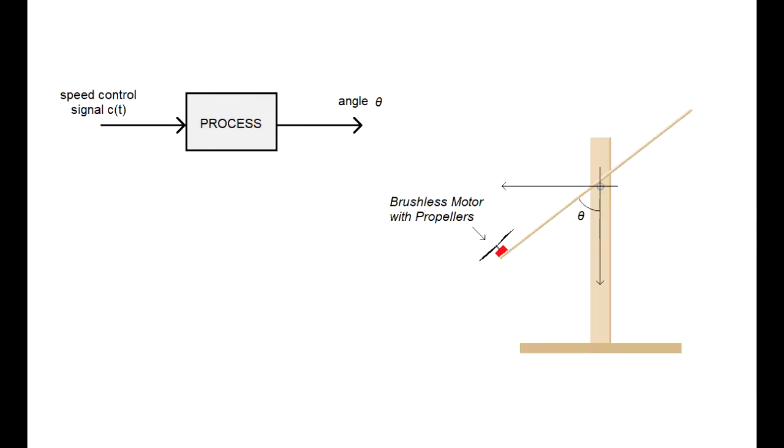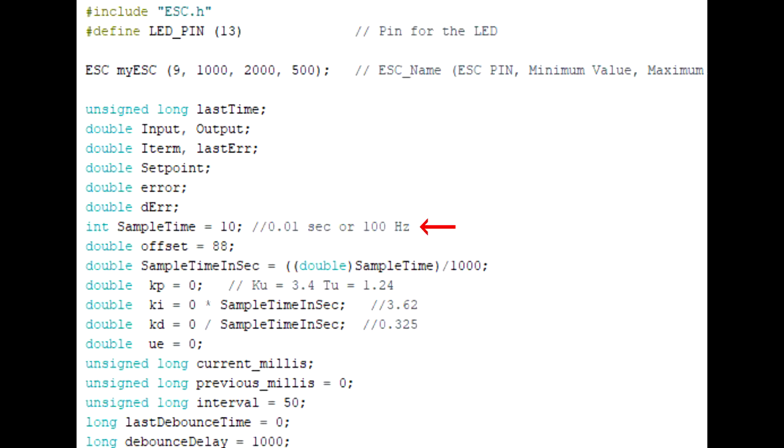In the propeller system, I measure the time constant to be around 0.5 seconds or 2 hertz. So the loop sample time should be at least 10 times faster or in this case 20 hertz. But I set it to 100 hertz for the sake of keeping the system robust.